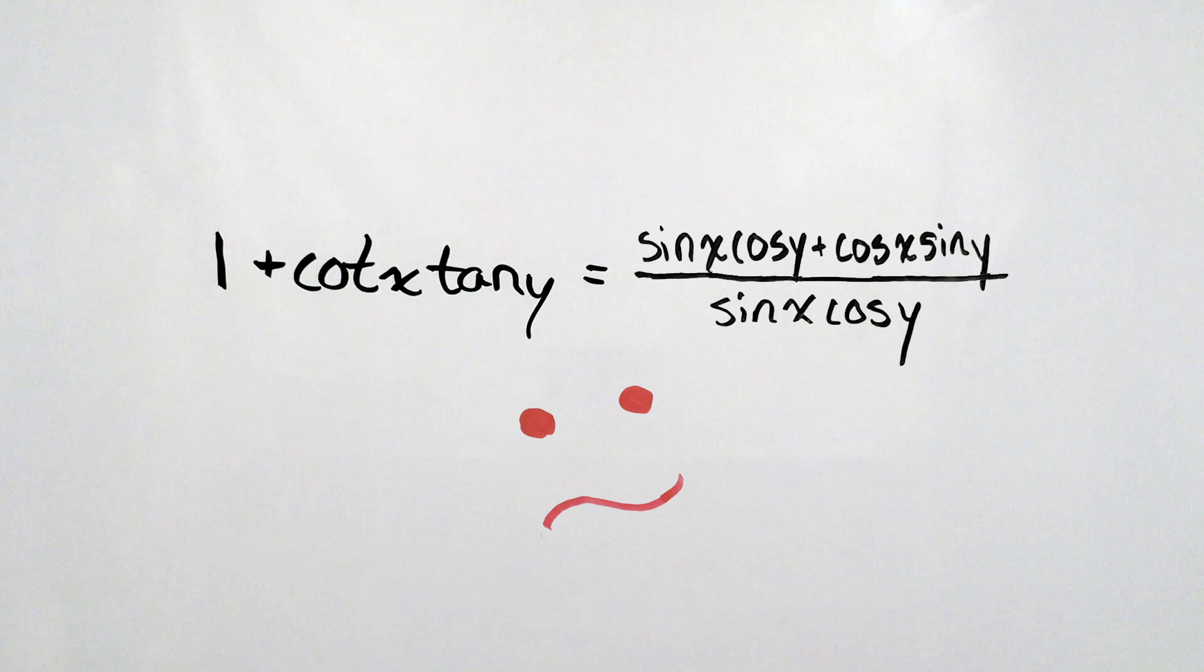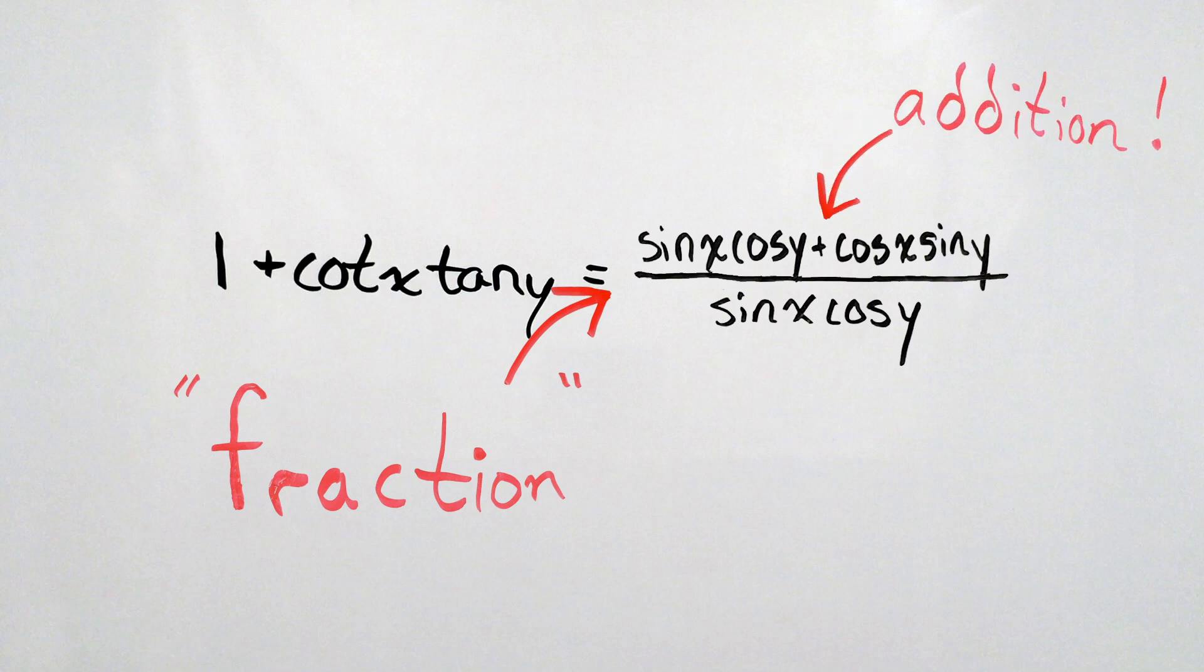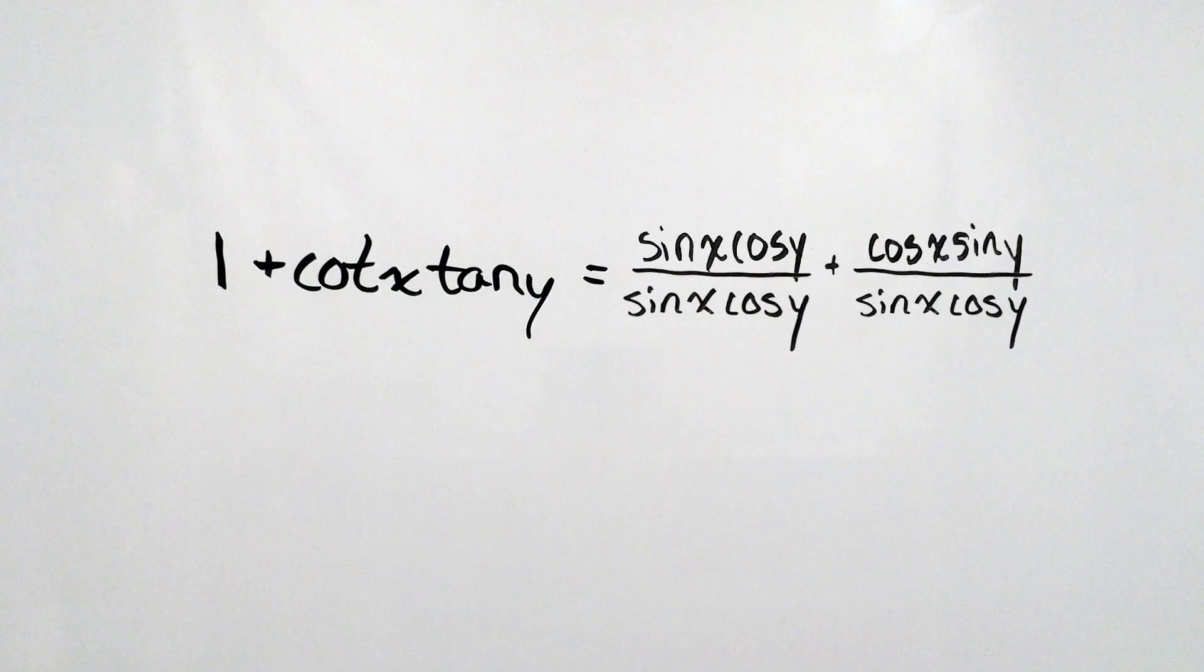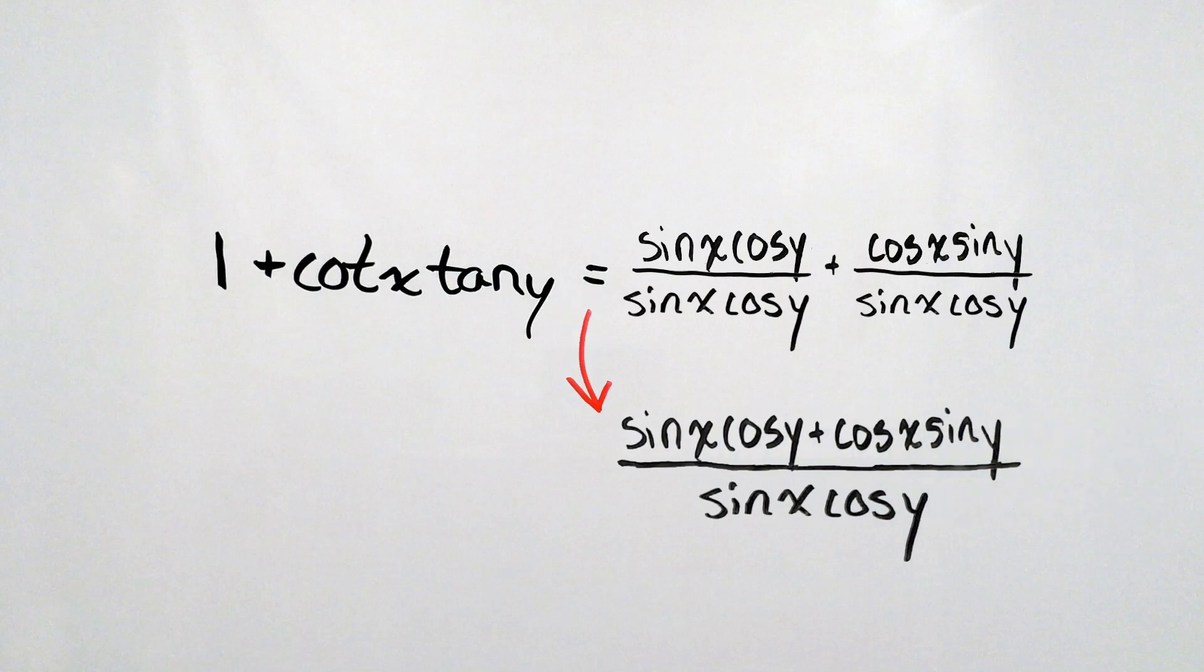This is the non-intuitive part that doesn't just jump out at you. But essentially what I have here is a fraction, and in the numerator, I have addition. So I can break this fraction up into a sum of two fractions, each with the same denominator. You can check using addition of fractions that if I add these two together, I get the original expression that I just had.